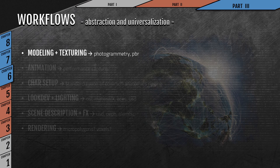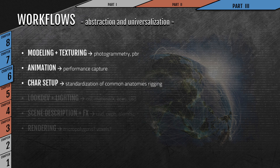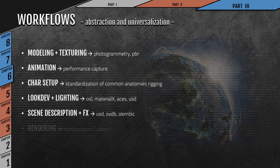Here are a few common denominators across companies and industries. For modeling and texturing: photogrammetry is now a common standard process for realistic looks. PBR standards have brought a lot of consistency across shader definitions and texturing processes. In animation, performance capture is now a standard common first step. In character setup, common bipeds and quadrupeds are pretty much standardized and auto-rigging processes are largely the same. In look dev and lighting, Open Shading Language, MaterialX, and ACEs are all going after the same effort of standardizing the process. For scene description and effects, USD, OpenVDB, and Alembic are very common universal formats.